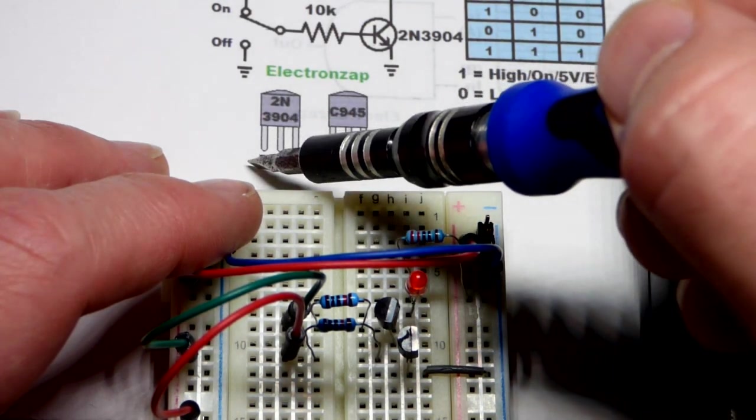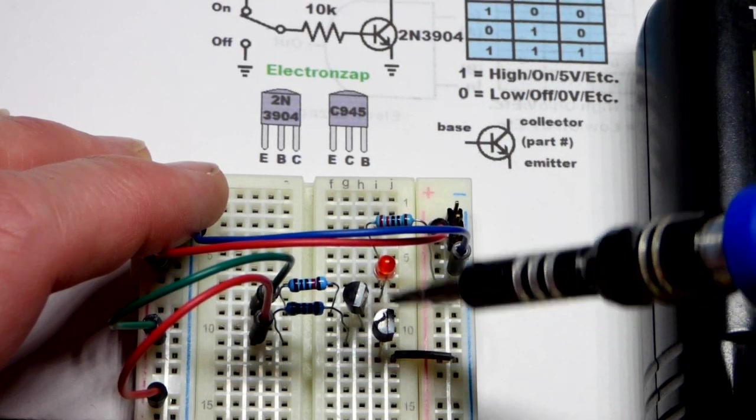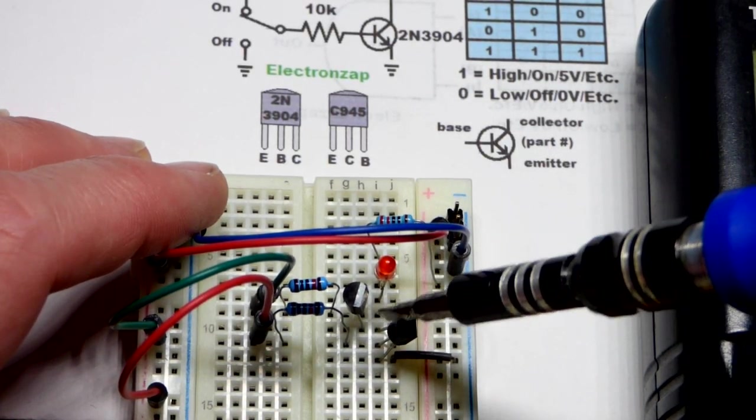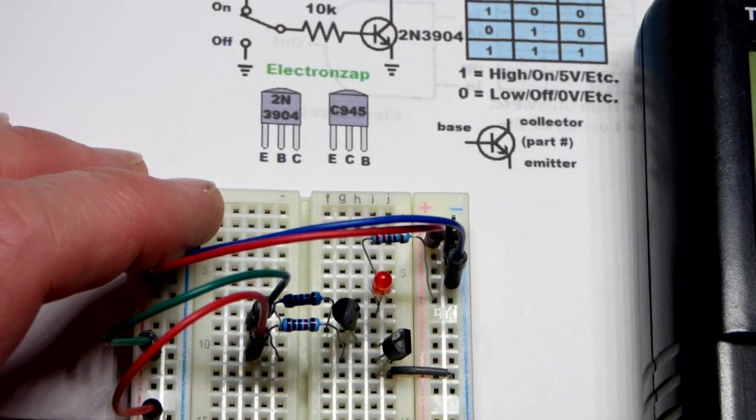So I'm using the 2N3904 emitter-base-collector when you're looking at the flat side. So emitter-base-collector, working that way. For both of these, we got the collector of this one to the emitter of that one. And this one, you would have to wire it differently.